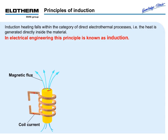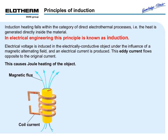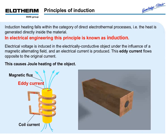Principles of Induction. Induction heating falls within the category of direct electrothermal processes — that is, the heat is generated directly inside the material. In electrical engineering this principle is known as induction. A definition: electrical voltage is induced in the electrically conductive object under the influence of a magnetic alternating field, and an electrical current is produced. This eddy current flows opposite to the original current, causing Joule heating of the object as shown in the video.